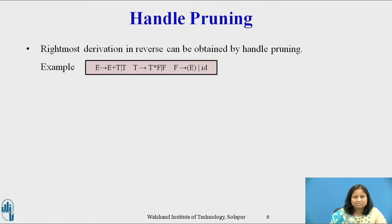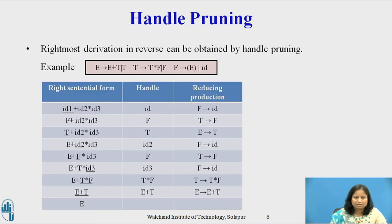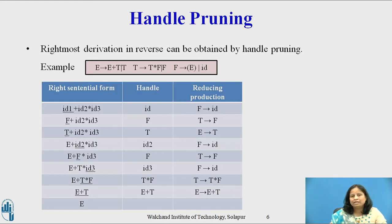Consider the same grammar after eliminating the ambiguity from the grammar considered in the previous slide. Since this grammar is unambiguous, there is only one derivation for the string id1 plus id2 into id3.